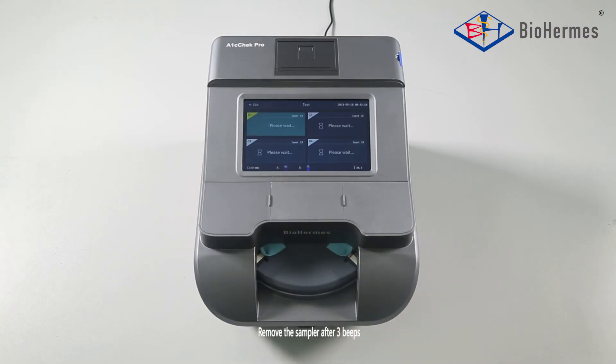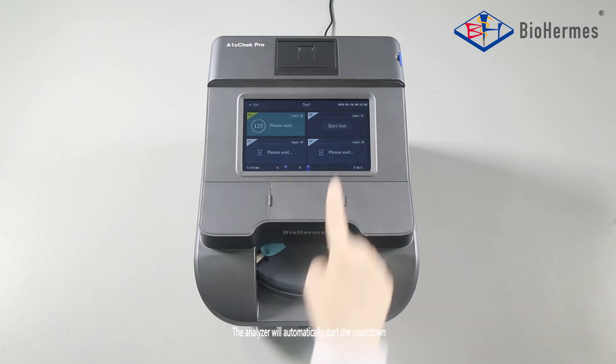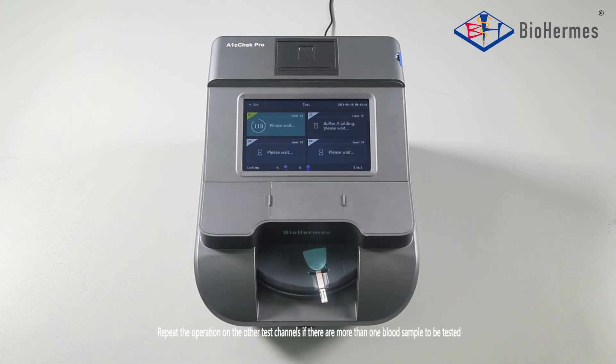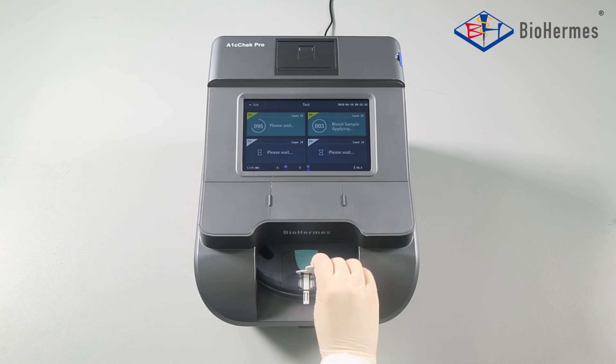Remove the sampler after three beeps. The analyzer will automatically start the countdown. Repeat the operation on the other test channels if there are more than one blood sample to be tested.